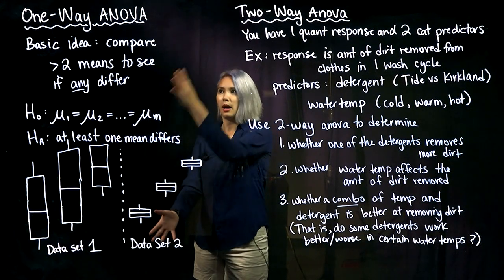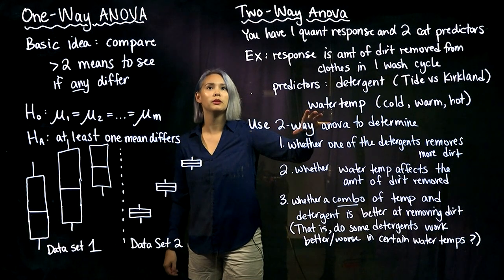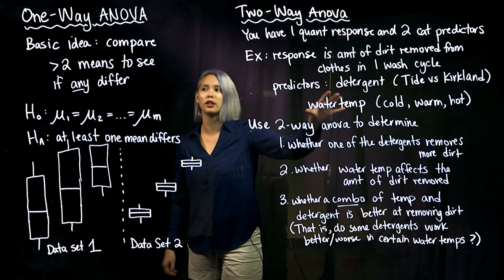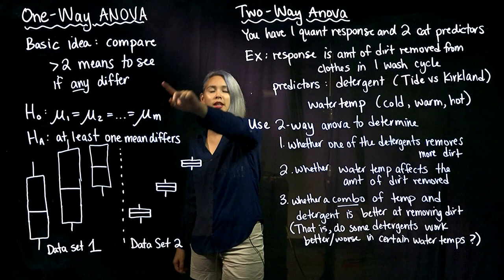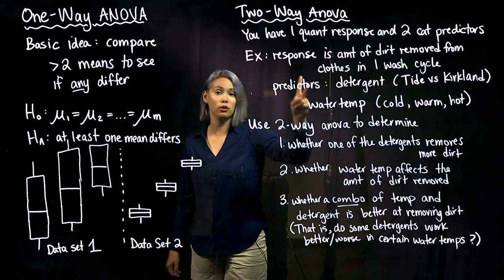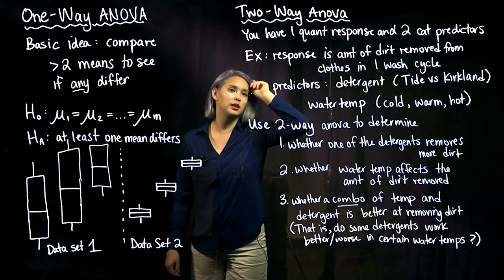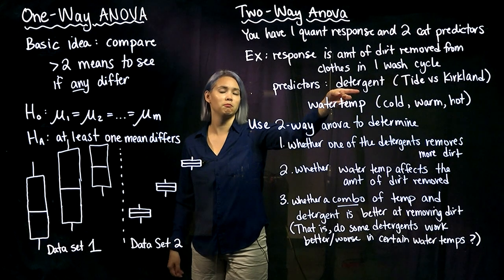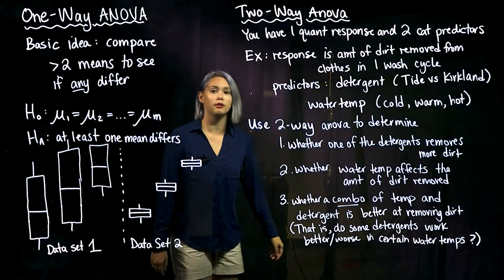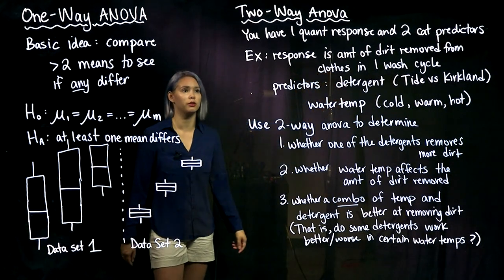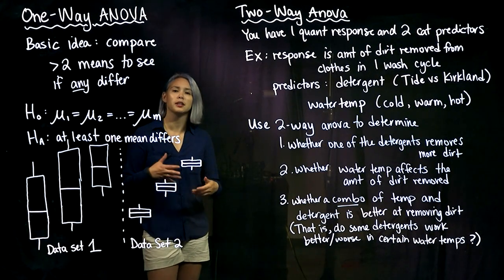That's the big idea for one-way ANOVA. For two-way ANOVA, we're changing things a little bit. In one-way ANOVA, we just had one categorical variable. Now in two-way ANOVA, we're going to have two categorical variables. We still have a quantitative response in both of these. It's easiest if we think about an example.